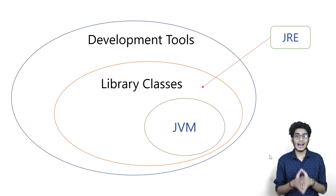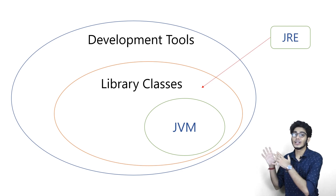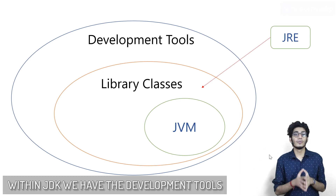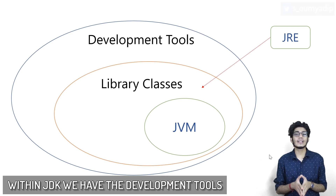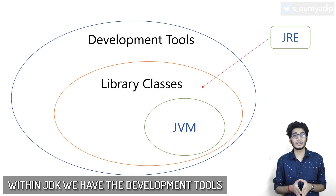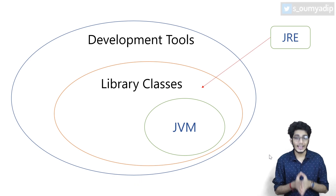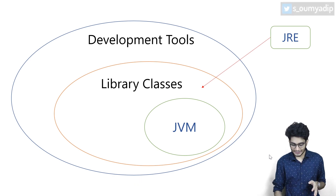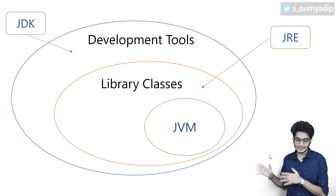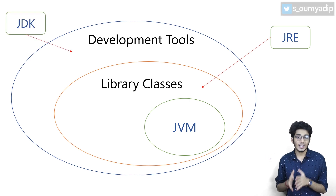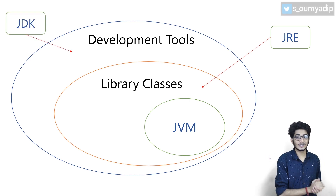The last layer is called development tools. Within JDK, we have the development tools. What are those? We have applet, we have fx, we have many security tools within JDK. A JDK contains a JRE, and a JRE contains JVM.